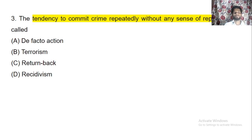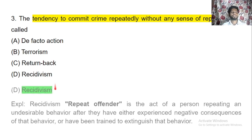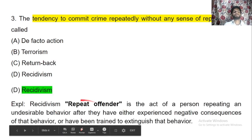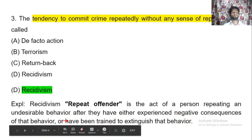Third question: the tendency to commit crime repeatedly without any sense of repentance is called recidivism. Recidivism refers to repeat offenders — the act of a person repeating an undesirable behavior after experiencing negative consequences or after being trained to extinguish that behavior. So the tendency to commit crime repeatedly is known as recidivism.